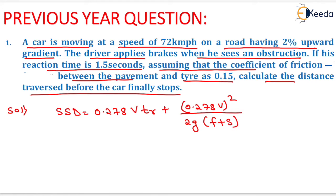On putting the value of V as 72, reaction time as 1.5 seconds, similarly here 0.278 into 72 whole square upon 2 into 9.81 into the value of small f, that is coefficient of friction is given as 0.15.